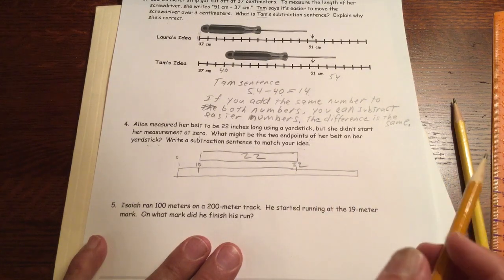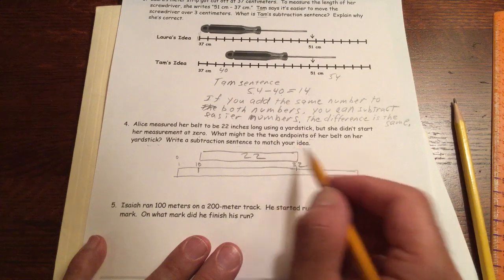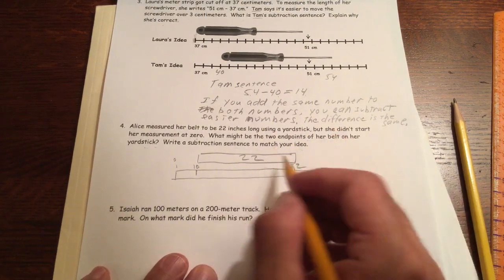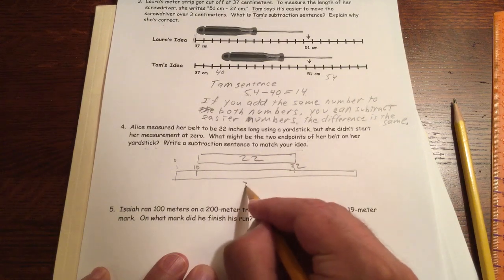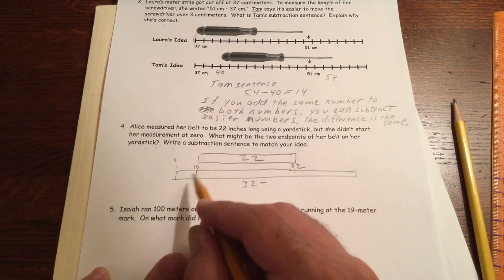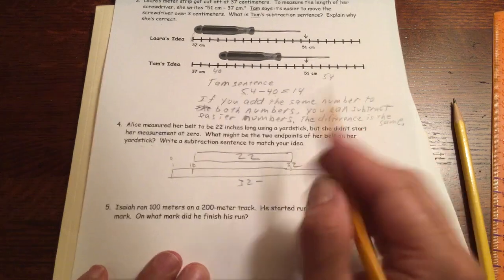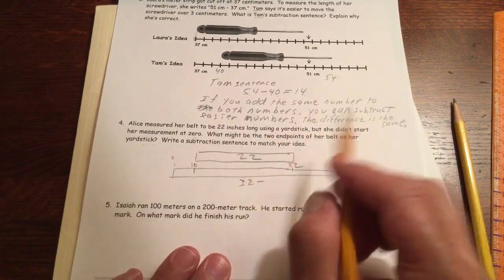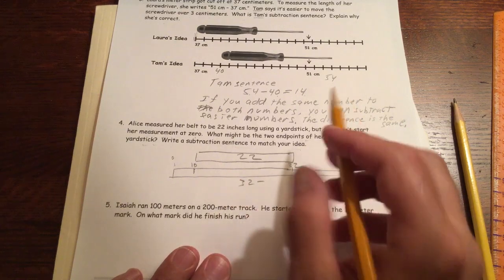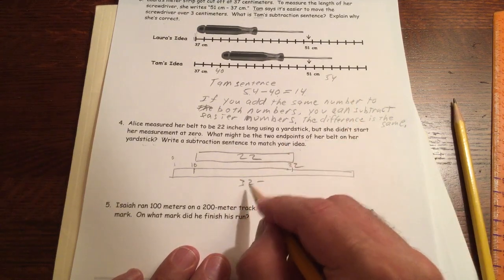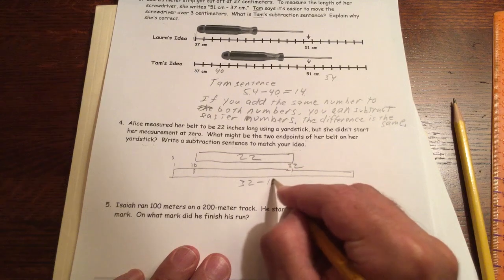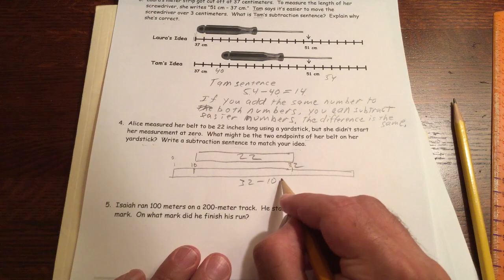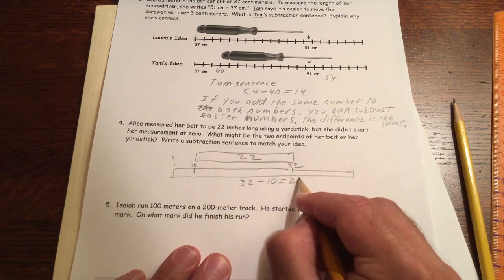Write a subtraction sentence to match your idea. Okay. So the subtraction sentence is 32. You can use different numbers. You don't have to use 10 and 32. You could use 20 and 42. You could use 100. That would be kind of tricky. 32 minus 10. And 10 is an easy number to subtract also. So that's a good one. Equals 22.